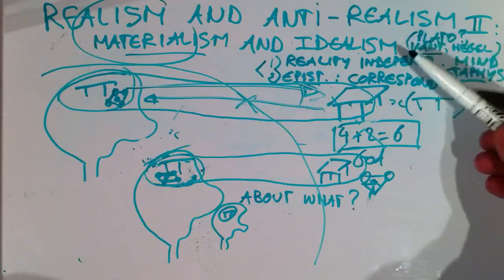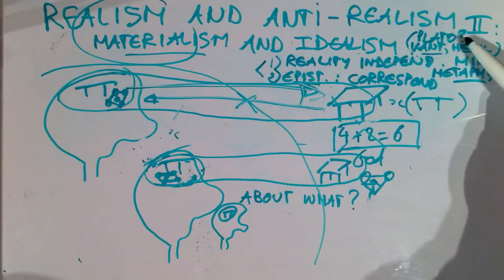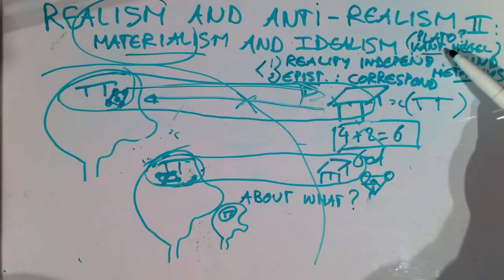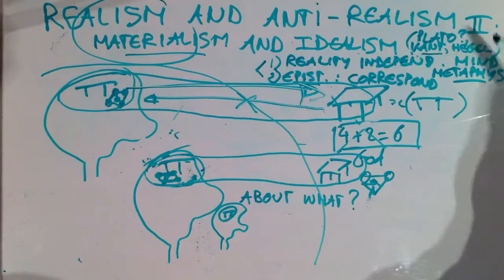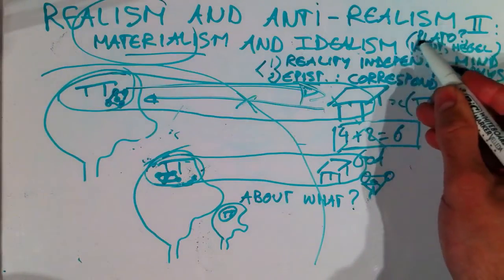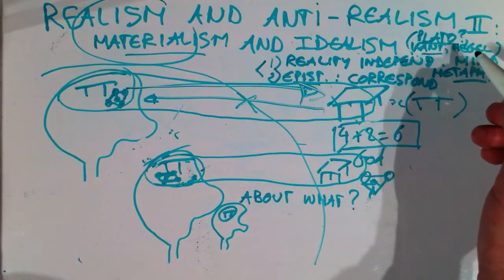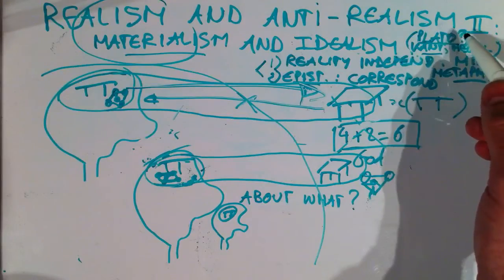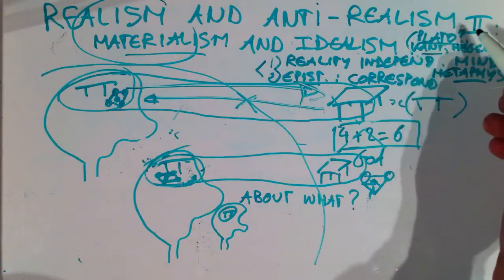I put Plato here with the idealists, but with a question mark. Kant is an idealist and Hegel is also an idealist, but Plato, is he an idealist? So that's a little bit tricky. Different philosophers have different opinions.